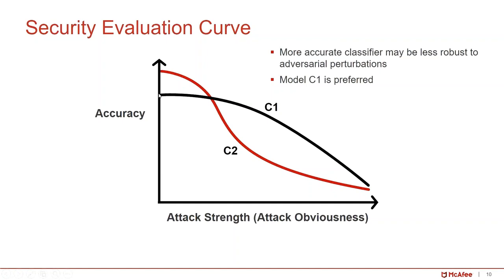In contrast, the black curve represents the other system. Even though when there is no attack its accuracy is a little lower, it remains robust and resilient to this type of attack as the attack strength gets stronger. So in this case, we prefer the black curve system because it is more robust to adversarial perturbation.